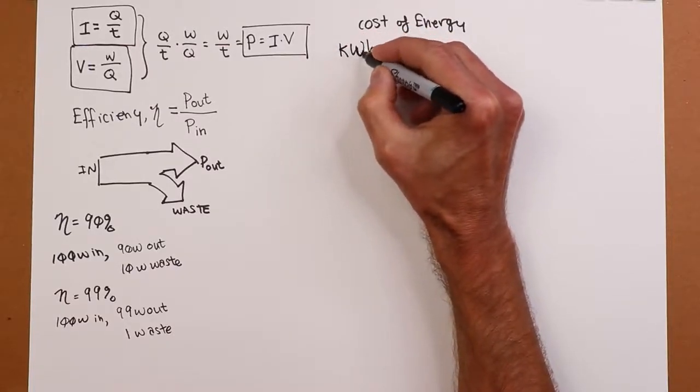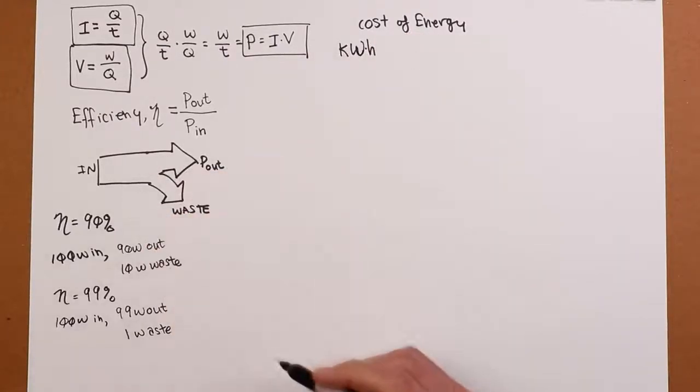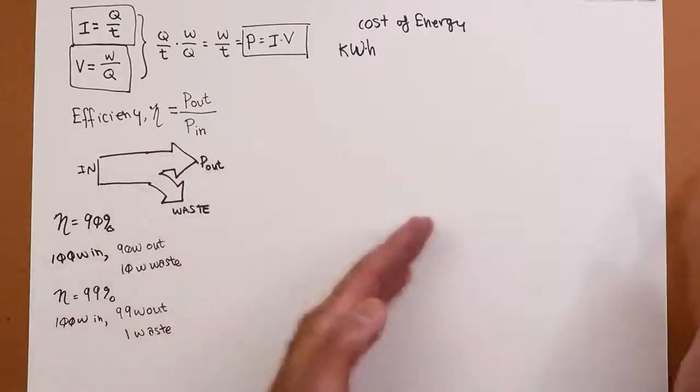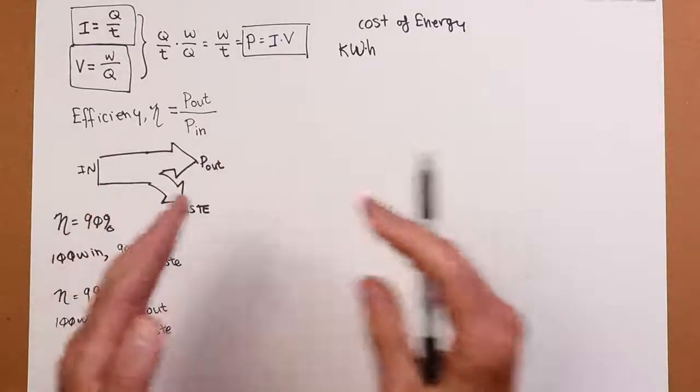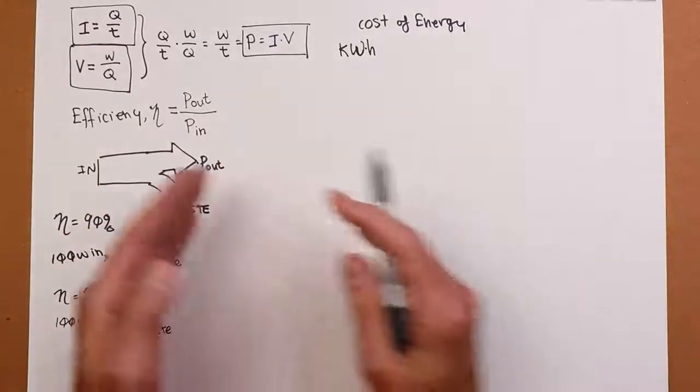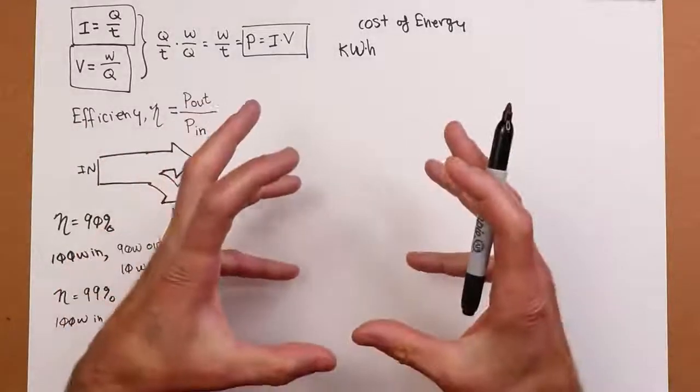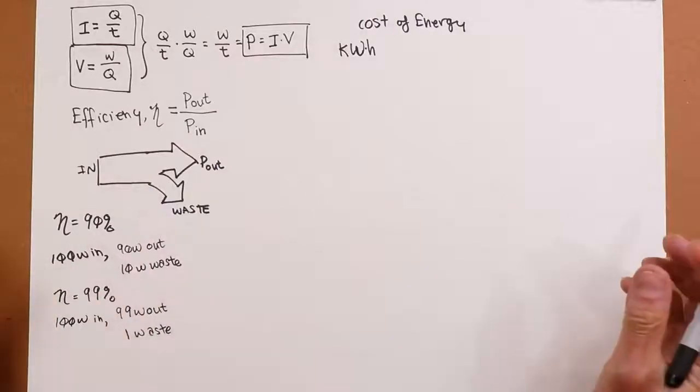So typical unit for that is kilowatt hours. That's basically kilowatts times hours. So we know our power is measured in watts. And you're basically saying a kilowatt hour would be 1000 watts in one hour, or 100 watts in 10 hours, or 50 watts in 20 hours. Whatever the product is, gives us a kilowatt hour, that's sufficient. It could be one watt in 1000 hours.